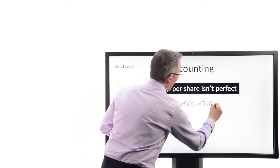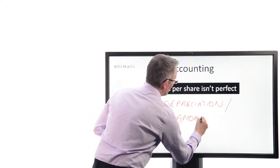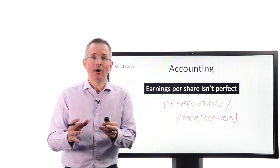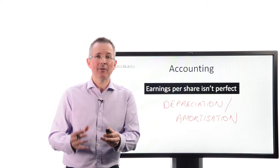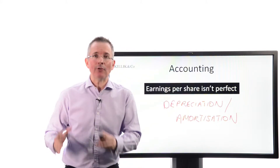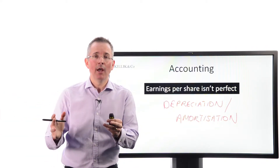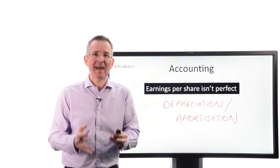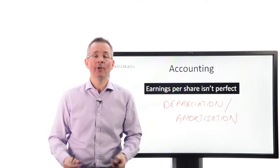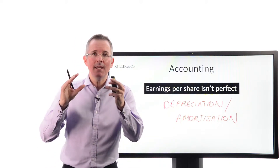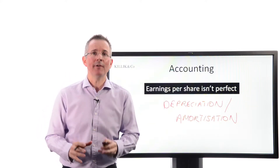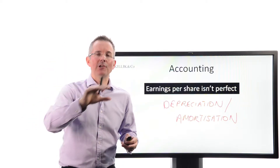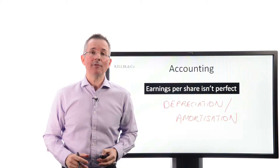Watch out for accounting sleights of hand, with depreciation and amortization being the two prime ones. The earnings figure you're using as a guide to whether the company is cheap or expensive includes a couple of quite subjective numbers. These involve directors sitting down and working out how long their long-term assets will last, charging a proportion of those values against profits. It's quite subjective — do you pick 10 years, 20 years, or 5 years? So bear in mind the earnings figure isn't perfect. That's why some analysts prefer numbers like EBITDA — earnings before interest, tax, depreciation, and amortization.